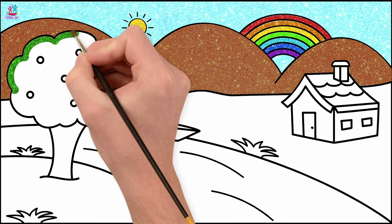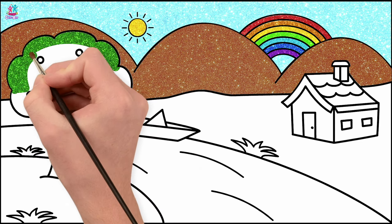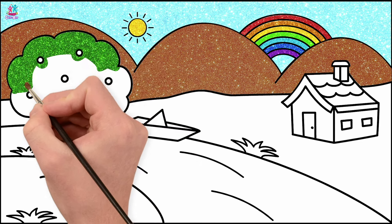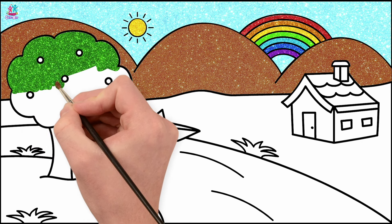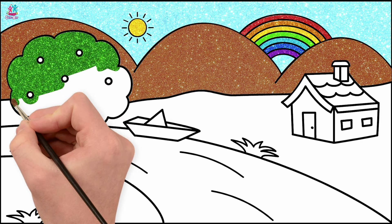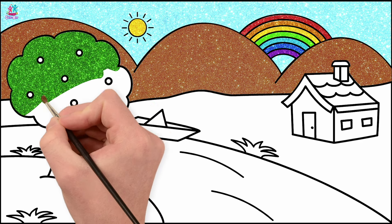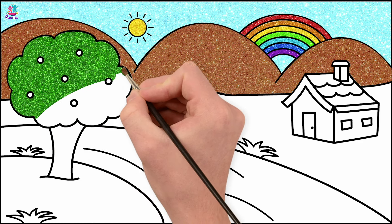Green tree — it's summertime, you know. Going around those fruits very carefully; we don't want to colour those in green. That's it.